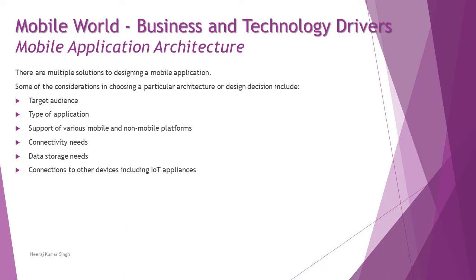Similarly, for mobile applications all these factors are considered for the architecture. There are multiple solutions to designing a mobile application, and considerations in choosing a particular architecture or design decision include: the target audience, the type of application, support of various mobile and non-mobile platforms, connectivity needs, data storage needs, and connection to devices including IoT appliances.